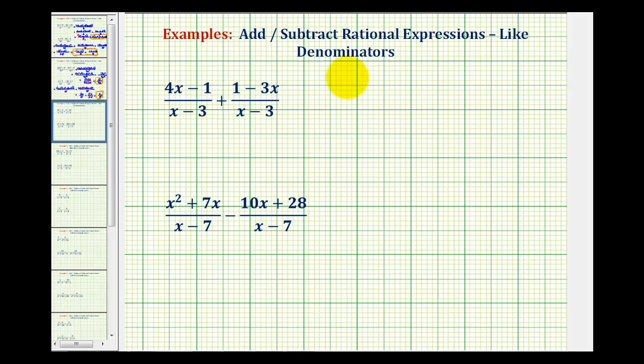To add or subtract rational expressions with like or same denominators, we keep the denominator the same and add or subtract the numerators.